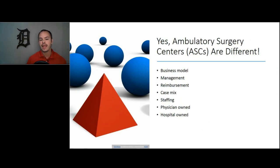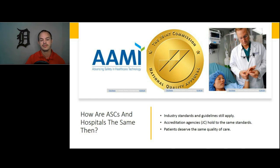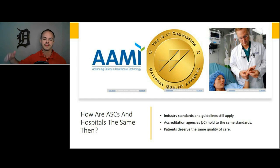Ambulatory Surgery Centers are different than acute care settings like the hospital. They may have different business models ranging from health system affiliations to standalone physician-owned. They differ in reimbursement, case mix, and various other things. However, ASCs are the same as hospitals in that the industry standards and guidelines all still apply. Accreditation agencies like the Joint Commission hold them to the same standards. Furthermore, patients deserve the same level of quality and safety in that outpatient setting, and patient satisfaction scores are typically much higher there.